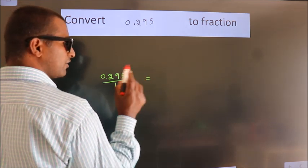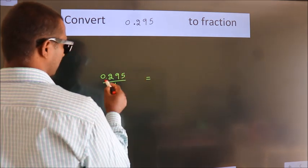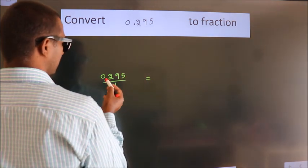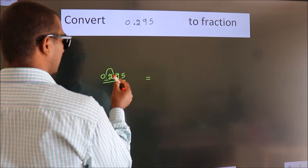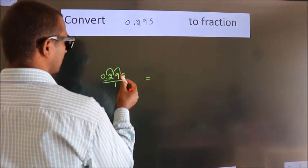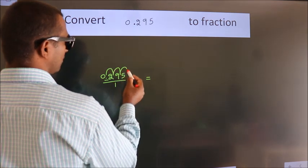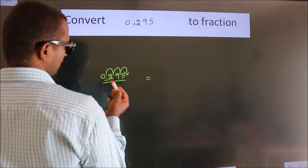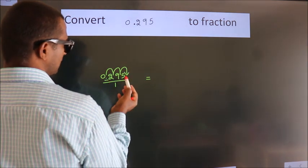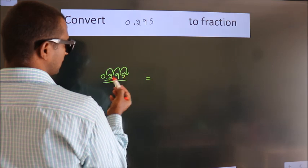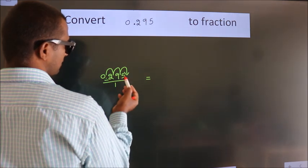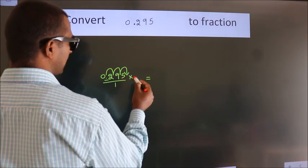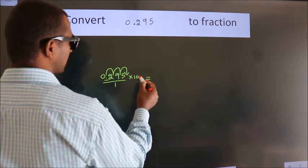we have to move this decimal after 1, 2, 3 numbers — to move this decimal after 3 numbers. For that, multiply it with 1000.